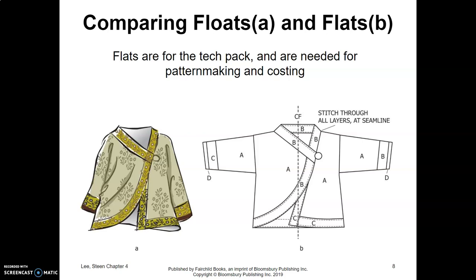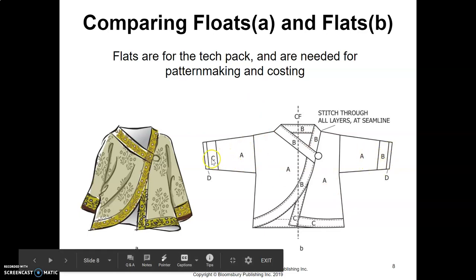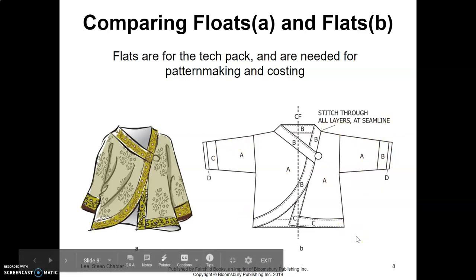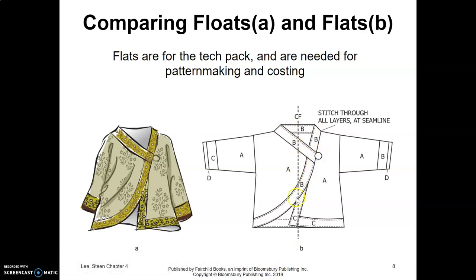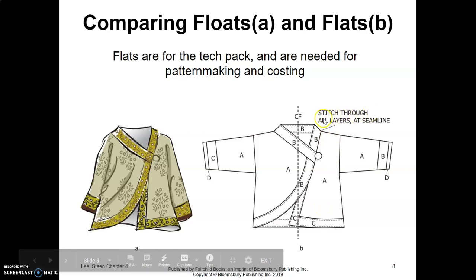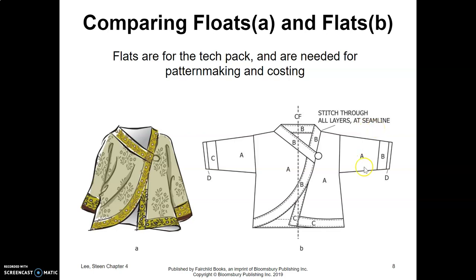In flats you can see the different pattern pieces clearly. They use a labeling system with lots of labels, measurements, and notes written on top, because someone needs to understand exactly how to sew it and put it together. For asymmetrical pieces, they even indicate where the center front is. They label trim pieces and sleeve pieces to indicate where different fabric types go, with instructions like 'stitch through all layers at the seam line.'